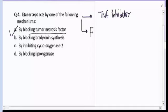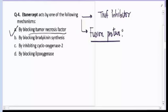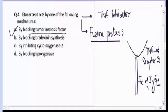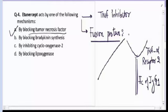Etanercept is a fusion protein, meaning it is engineered by fusing two different types of protein. It contains TNF-alpha receptor type 2 linked to the Fc portion of IgG1 antibody. When Etanercept is given, it binds with the TNF-alpha circulating in the plasma and hence blocks the action of TNF-alpha.